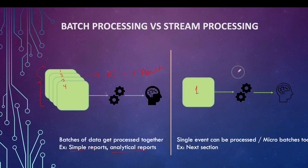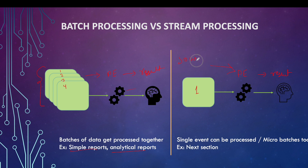The processing engine can take one event, process it, and generate the result. In stream processing systems, the processing engine continuously reads data or events from the source, processes it, and generates the result. A single event can be processed at a time.